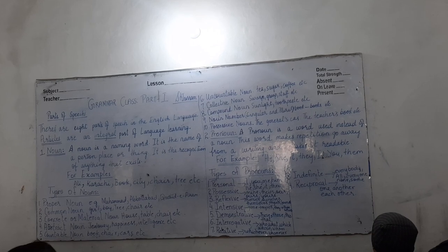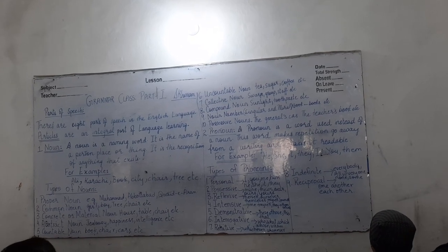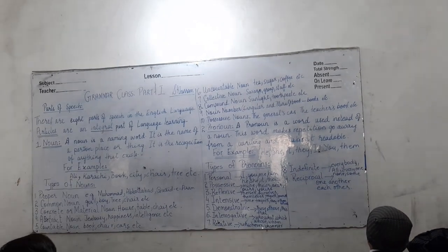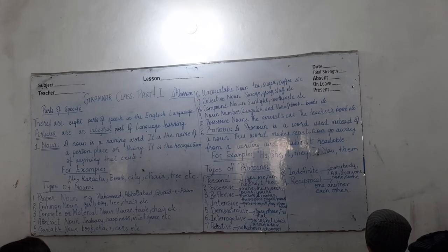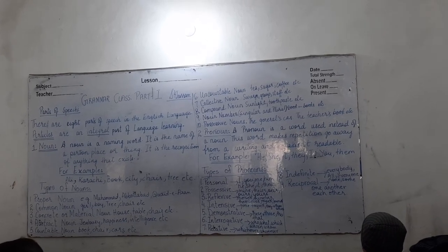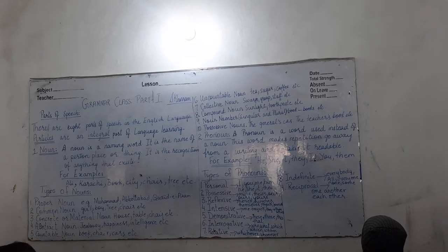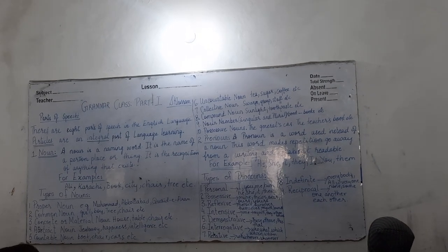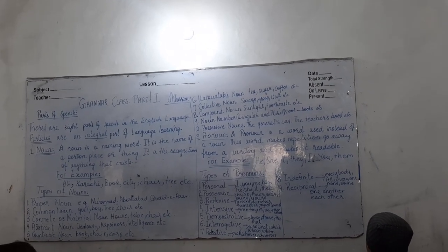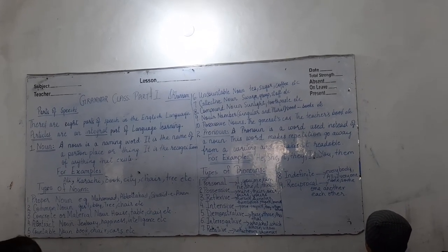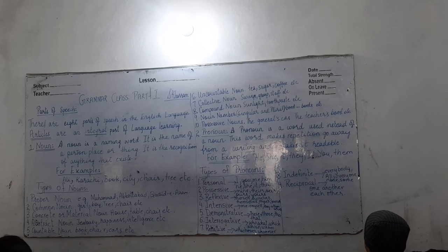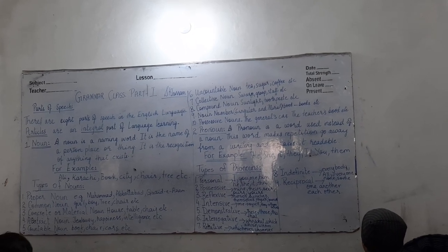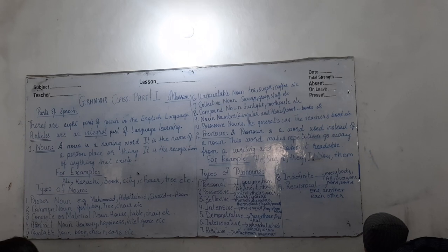Next is compound noun — for example: sunlight, toothpaste, etc. Number nine is noun number, that is singular and plural: book/books, car/cars, school/schools, etc. Then there are possessive nouns — for example: the general's car, the teacher's book. Here, by adding an apostrophe, the case is turning into possessive form.